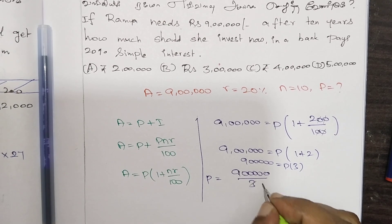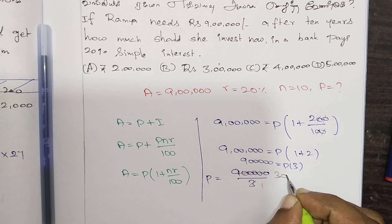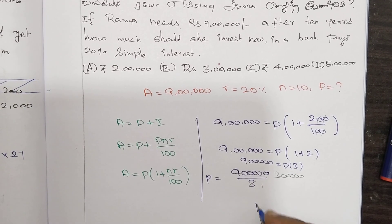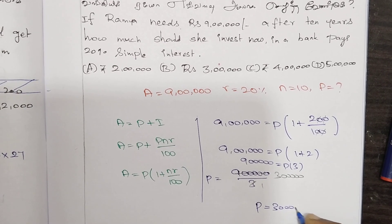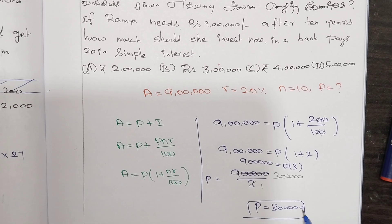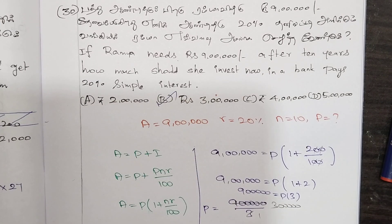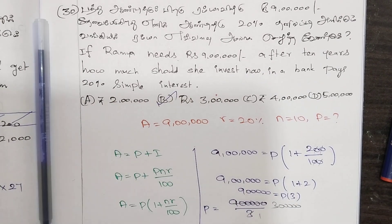So P equals 3 lakhs. That's right — Option B. It is easy once you know the formula.